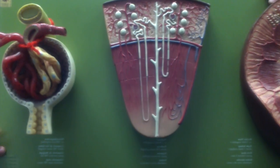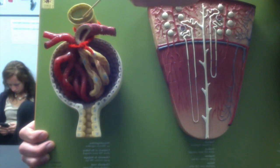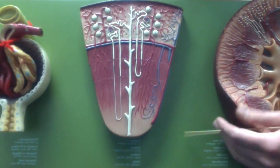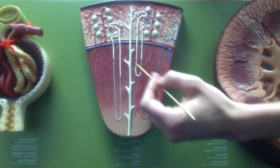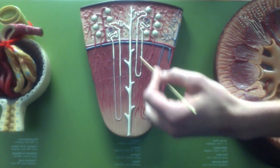The final thing we have to go over is the paratubular capillaries, and those are going to be the capillary beds that surround these tubules and the loop of Henle.